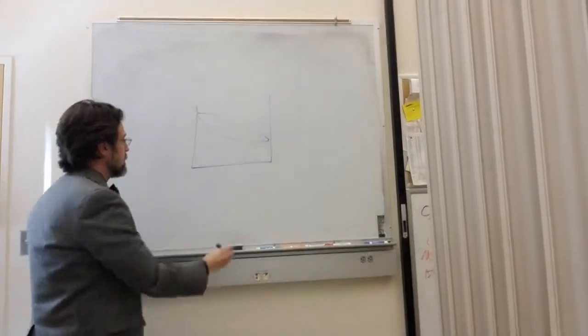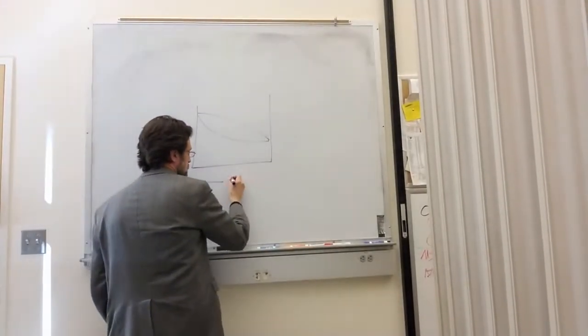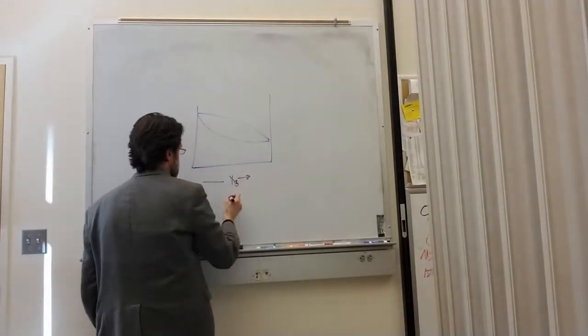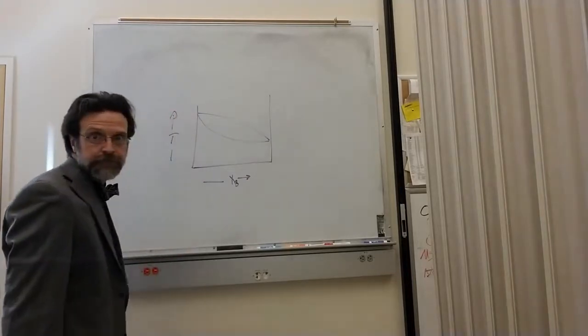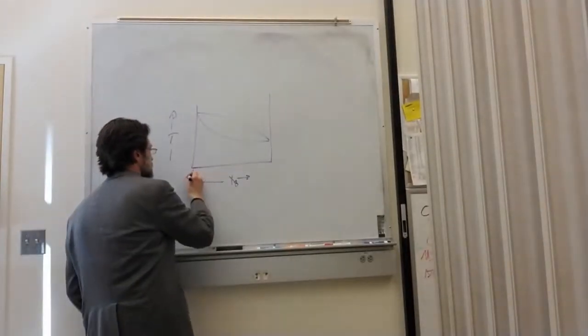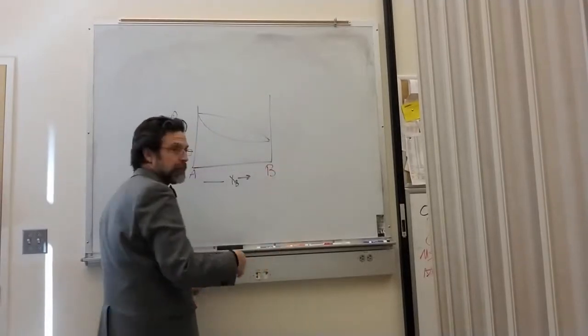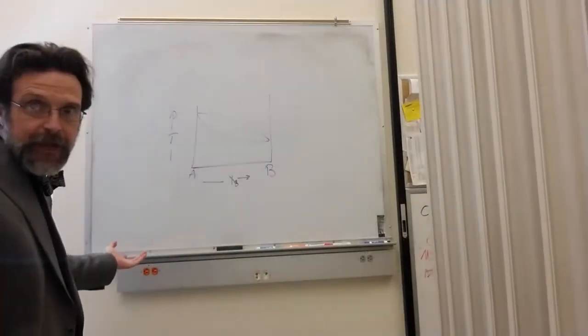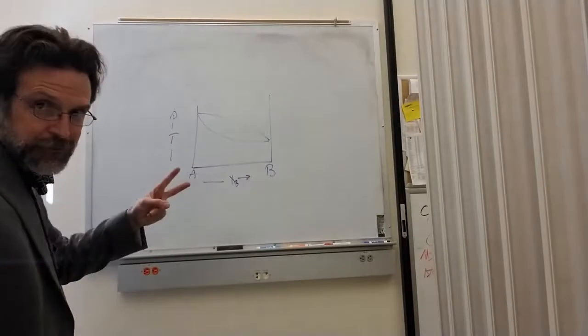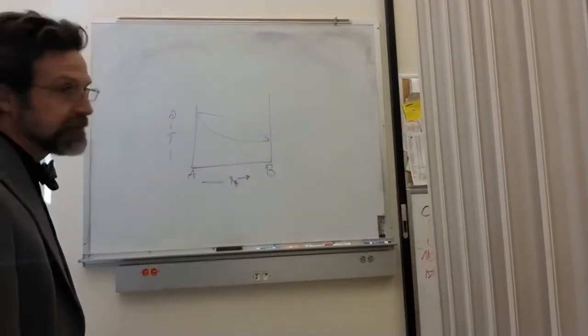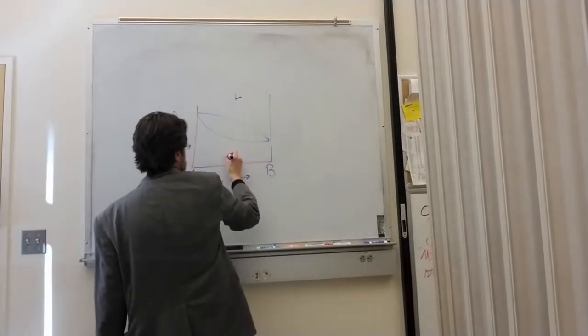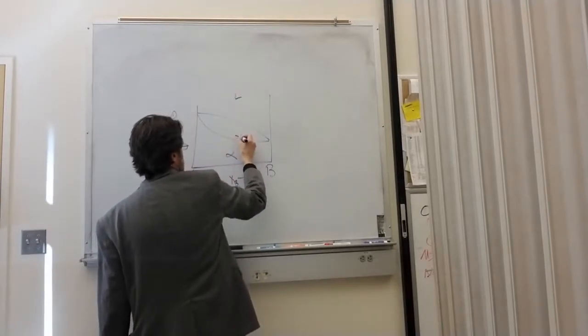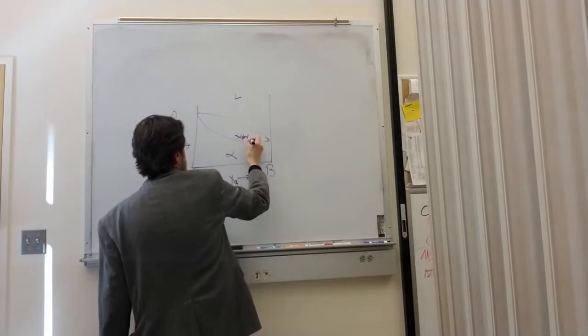So I got the simple phase diagram, and I've got composition and I've got temperature. And this is an A-B component two-element mixture. High temperature, I've got liquid. Low temperature, I've got alpha. Intermediate, I've got alpha plus liquid.